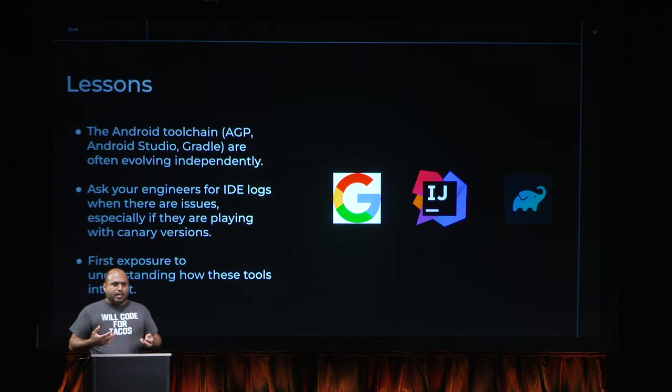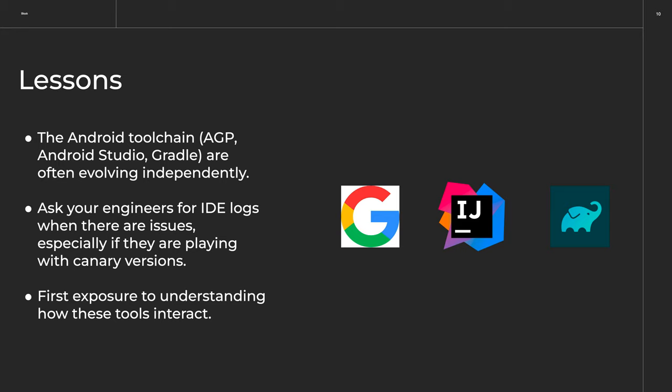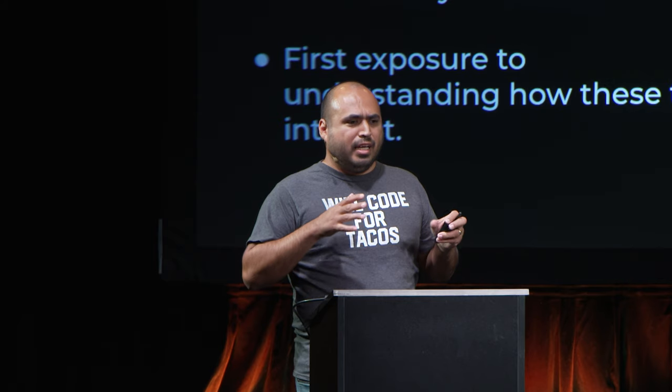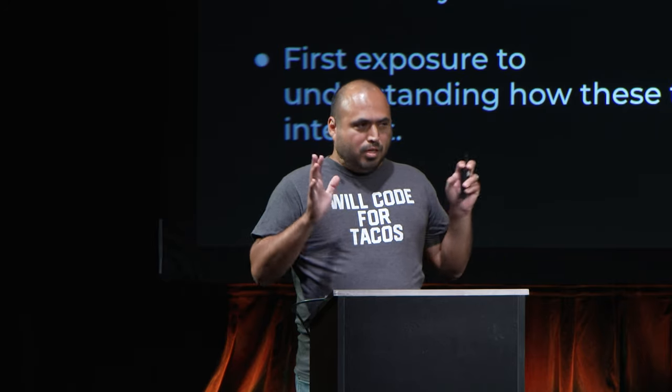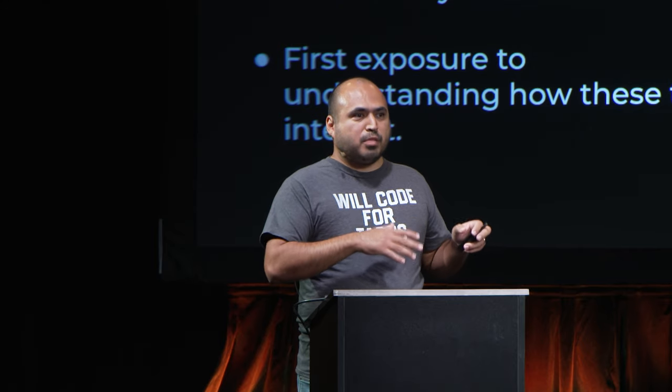We realized Android Studio wasn't ready for the namespace migration, so we did a full rollback. Asking engineers for IDE logs immediately was very helpful and was our first real exposure to looking into the IDE and internal build tools used for JVM and Android apps. Unfortunately, the rollback didn't seem to help.